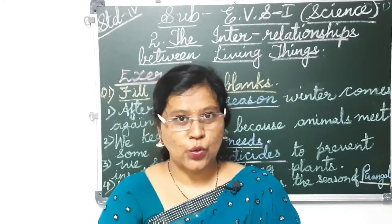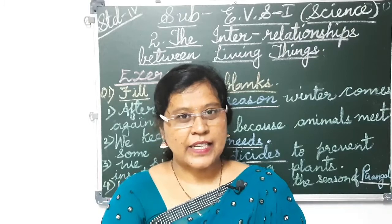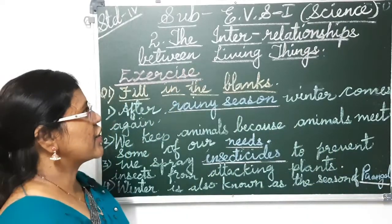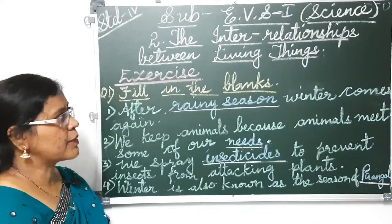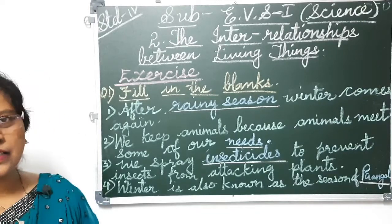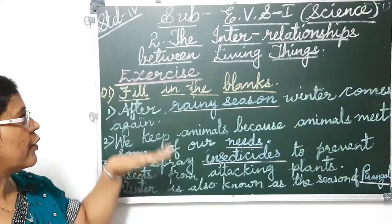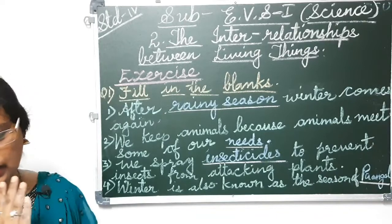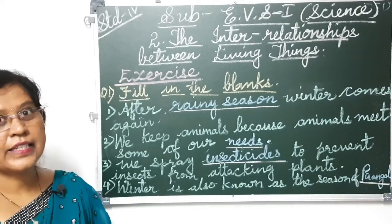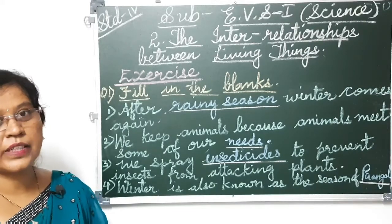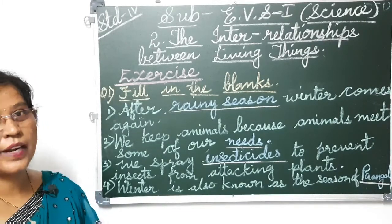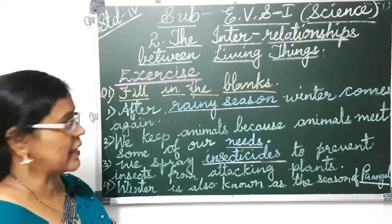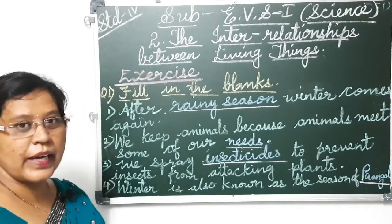Lesson number 2 is the interrelationship between living things. We are going to write down the exercise which is there in your science textbook, that is EVS 1, and below the lesson, this exercise is given to you.